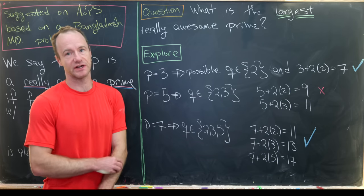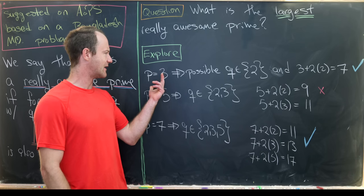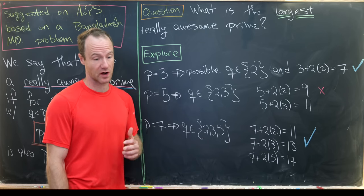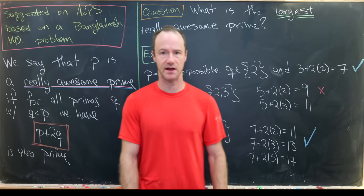Let's do a little bit of exploration first. So you could have the case when p equals 2 and there are no smaller primes, so you would get an empty sum. But maybe that's not super interesting.